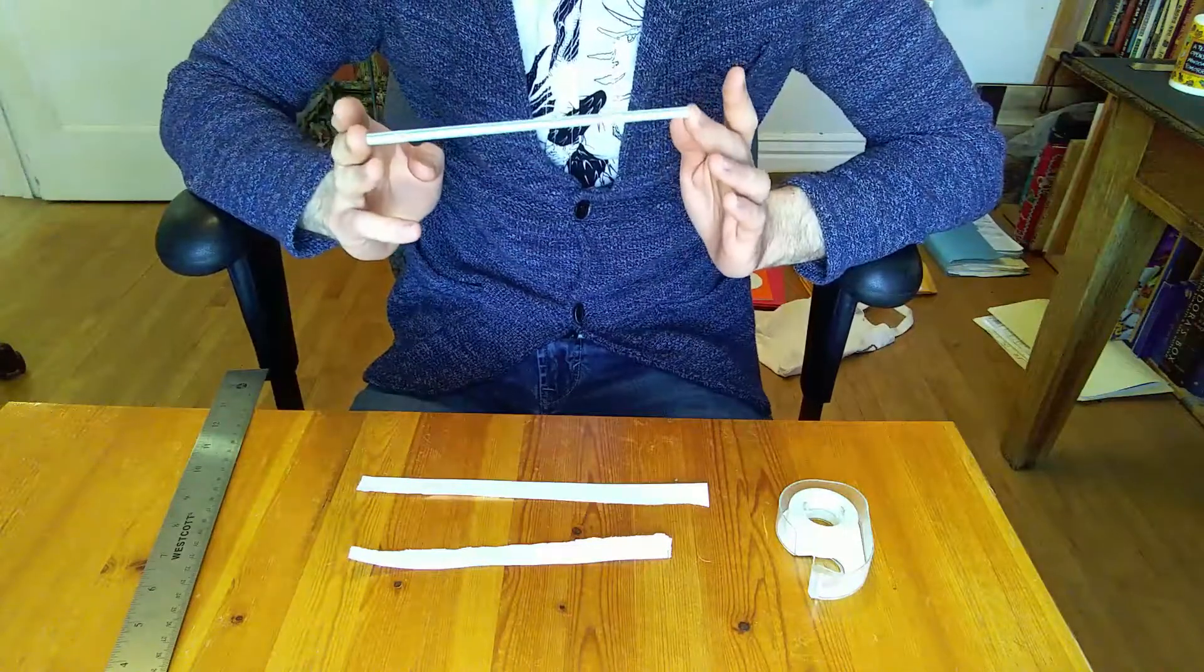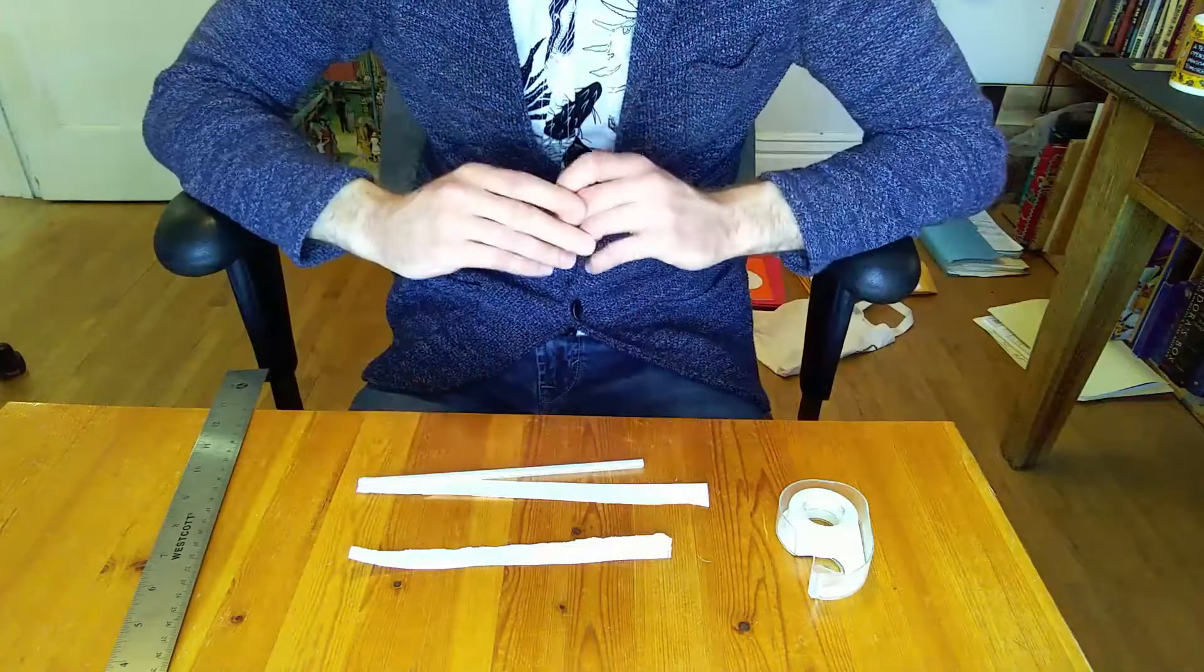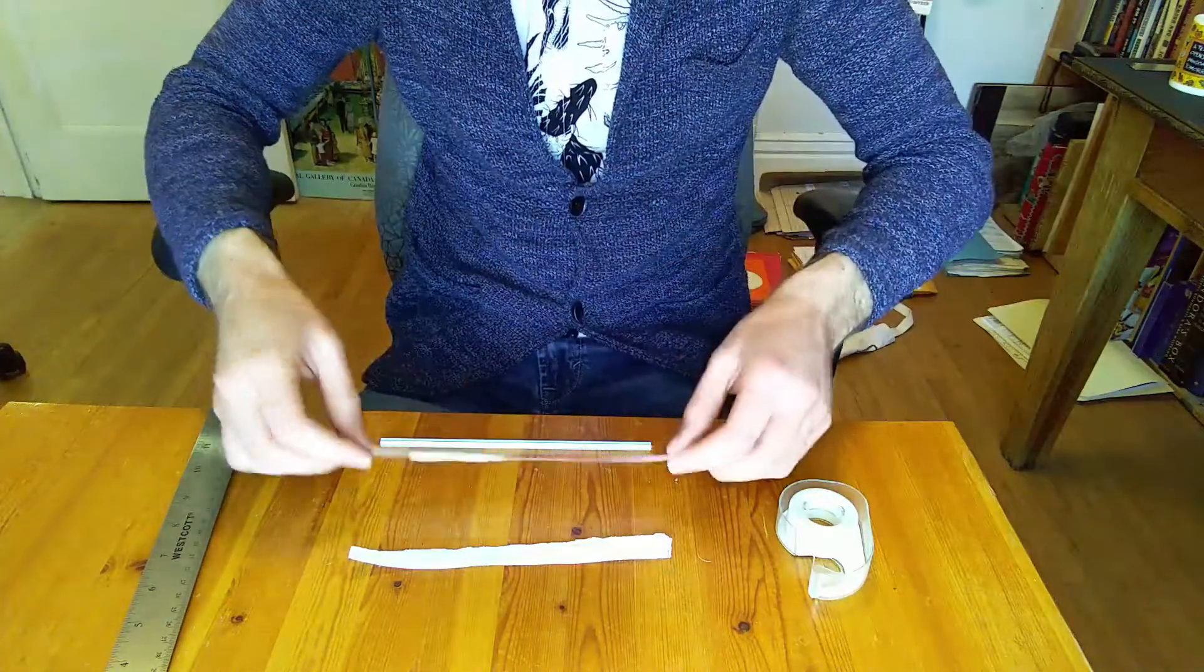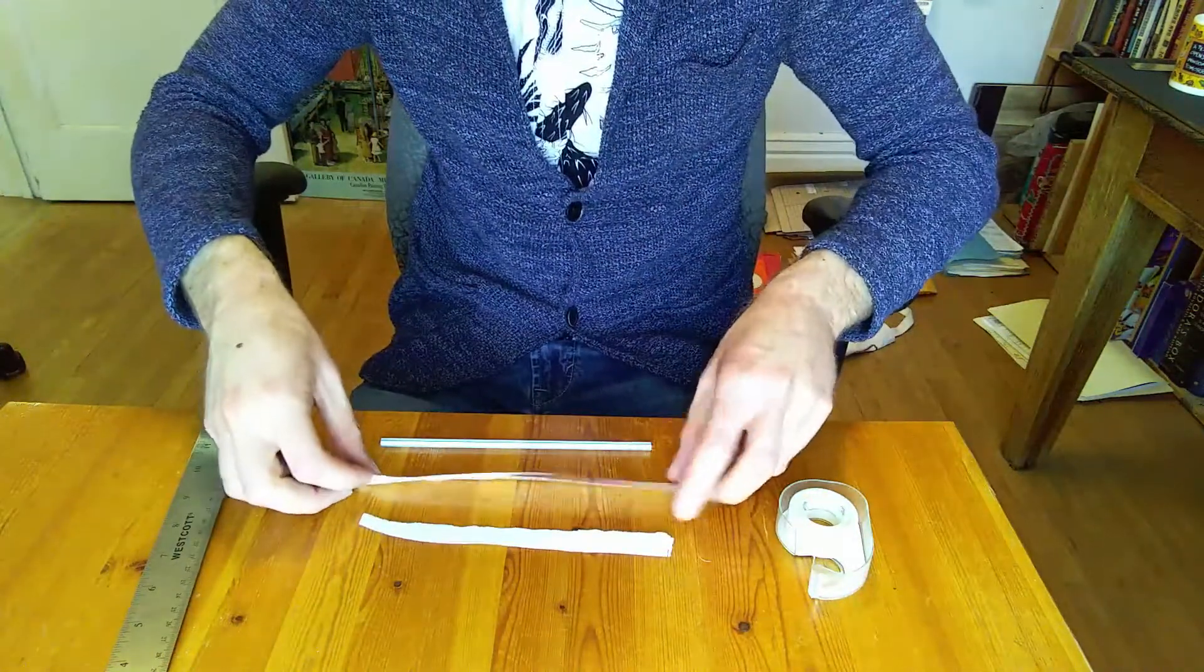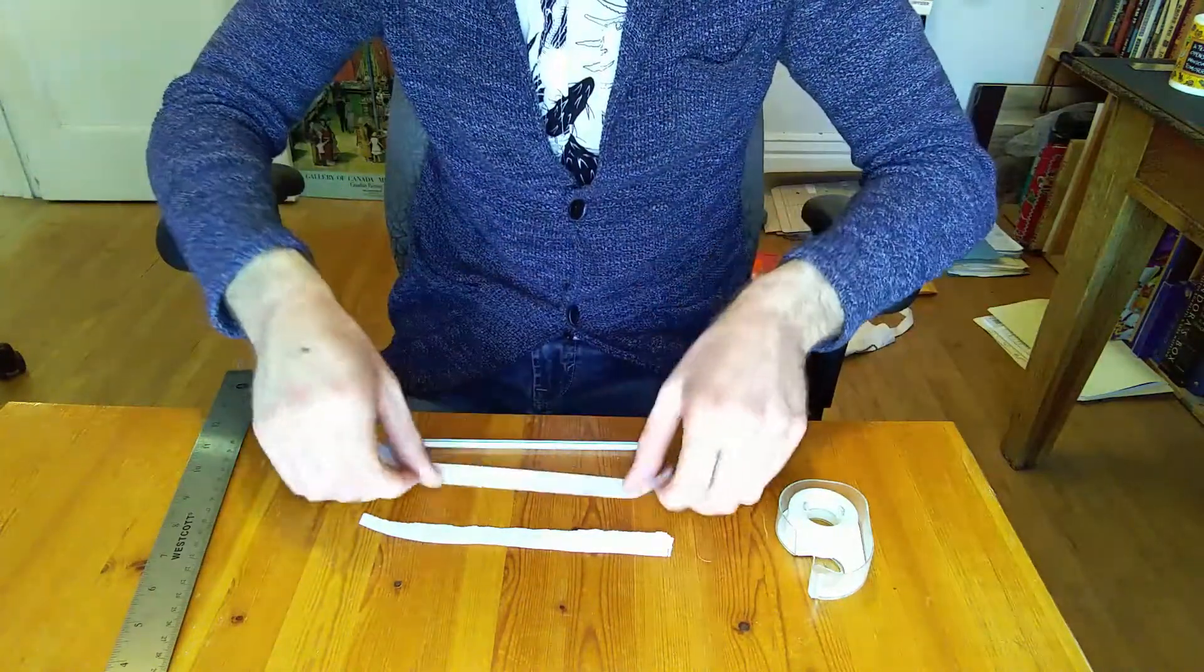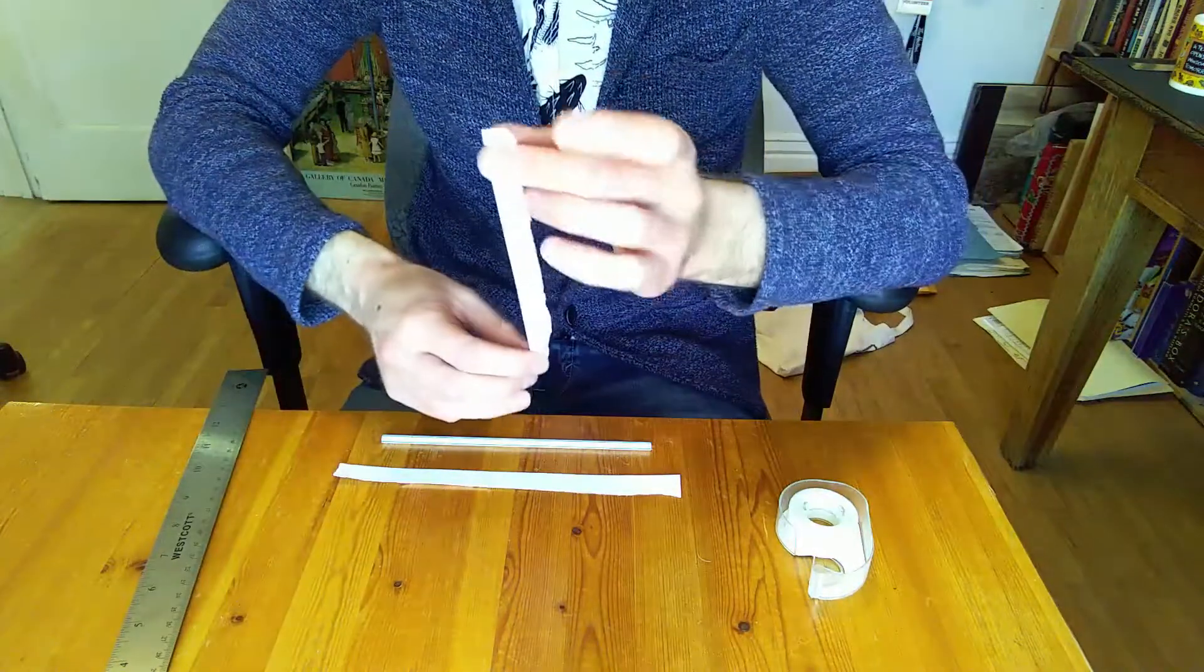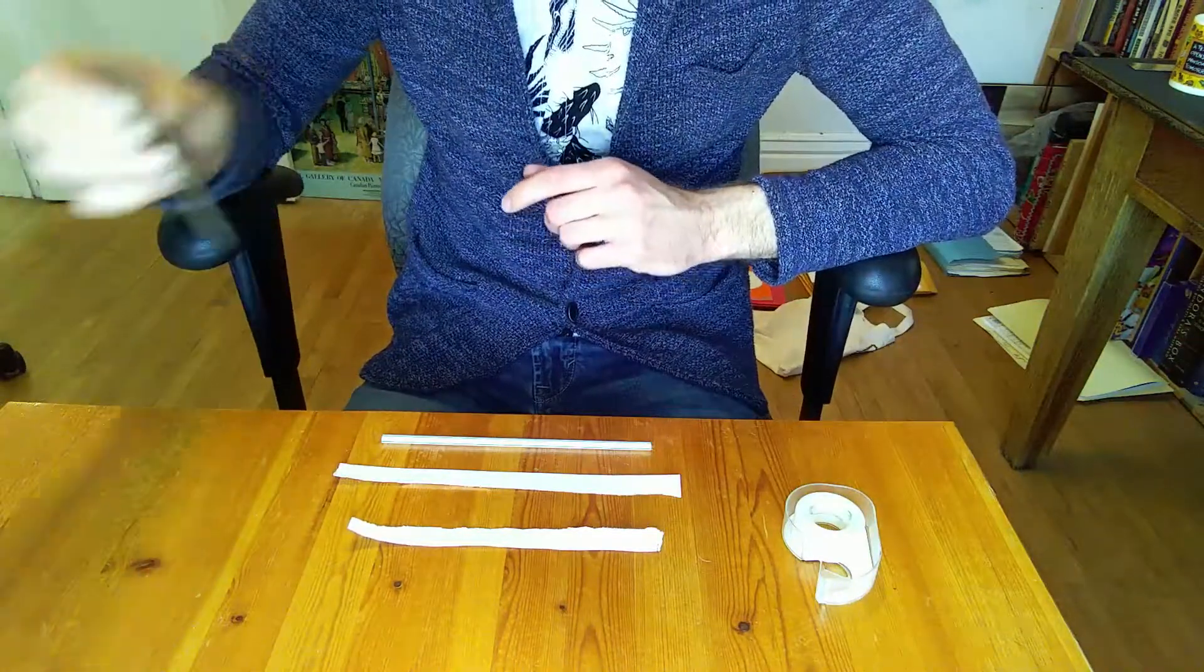Don't get a bendy straw, get one that's completely straight. If it is bendy you can just cut off the bendy part. And finally, two strips of paper. And I have measured these ahead of time. Our first one is 24 cm long and 2 cm wide. And the other one is 17 cm long and 1.5 cm wide. And I measured that using my ruler.